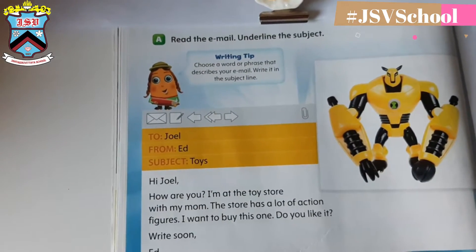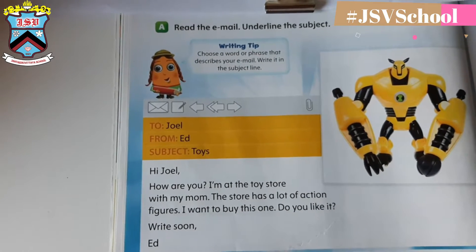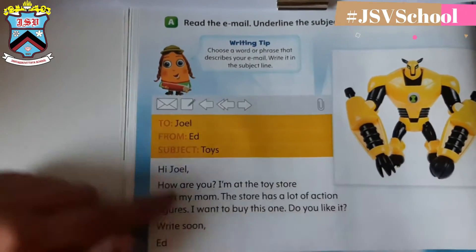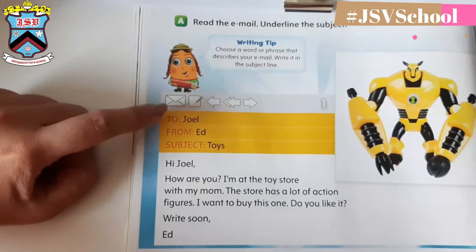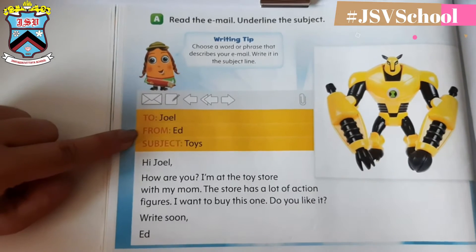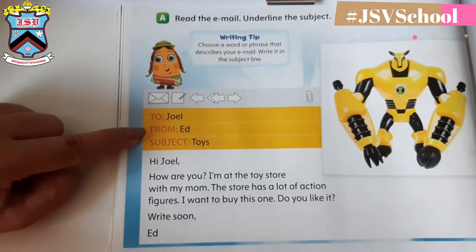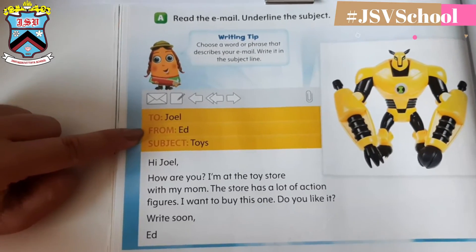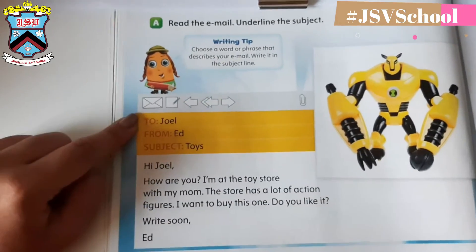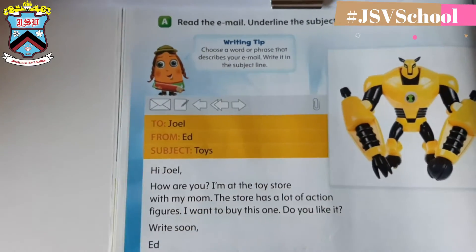That is what a subject is — what the letter is about, something that describes your e-mail. So if you are going to choose the word or phrase that describes your e-mail, you write it in the subject line. Remember: 'to' is where you are going to send your letter, and 'from' is from the person who gave the letter. The subject is toys.